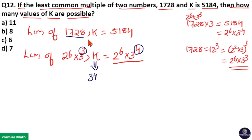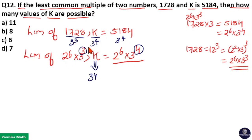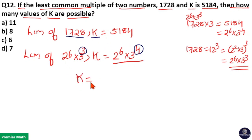Because if you consider 1728 and K: if 1728 has 3 cubed and the LCM has 3 raised to 4, then K must have 3 raised to 4. Because if you consider 3 cubed and 3 raised to 4, the LCM must have 3 raised to 4. So one of the factors of K is 3 raised to 4.